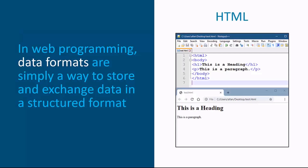In web programming, data formats are simply a way to store and exchange data in a structured format. HTML, or hypertext markup language, is a way of structuring data for software to understand. In this case, you have the web page in HTML, and the web browser, or software, is able to understand the markup language and then present the data with the proper styling.